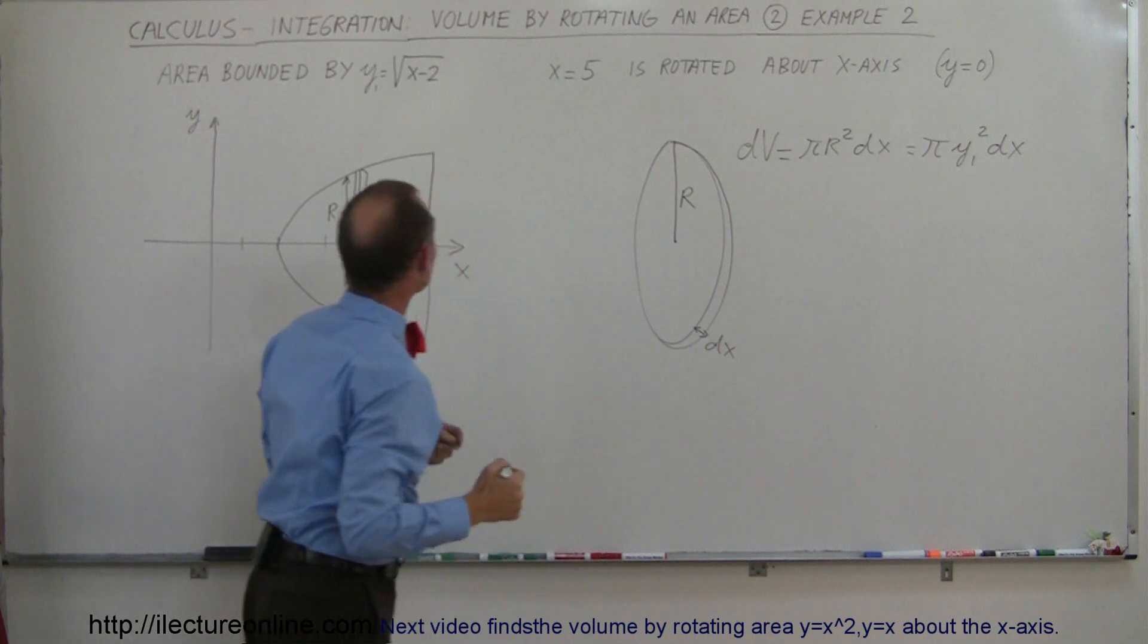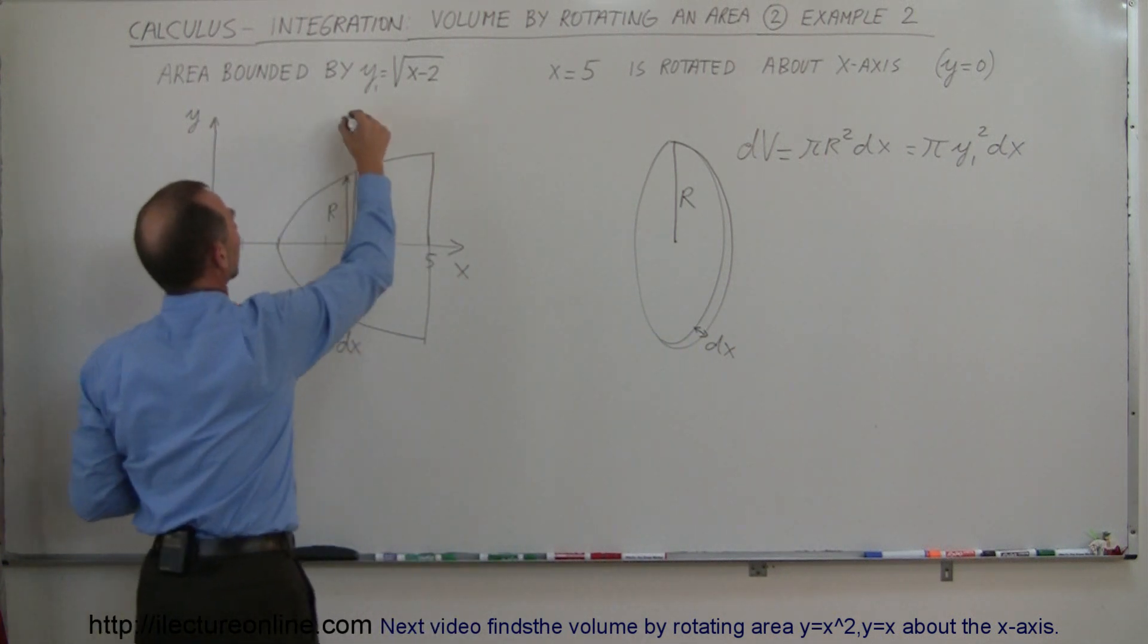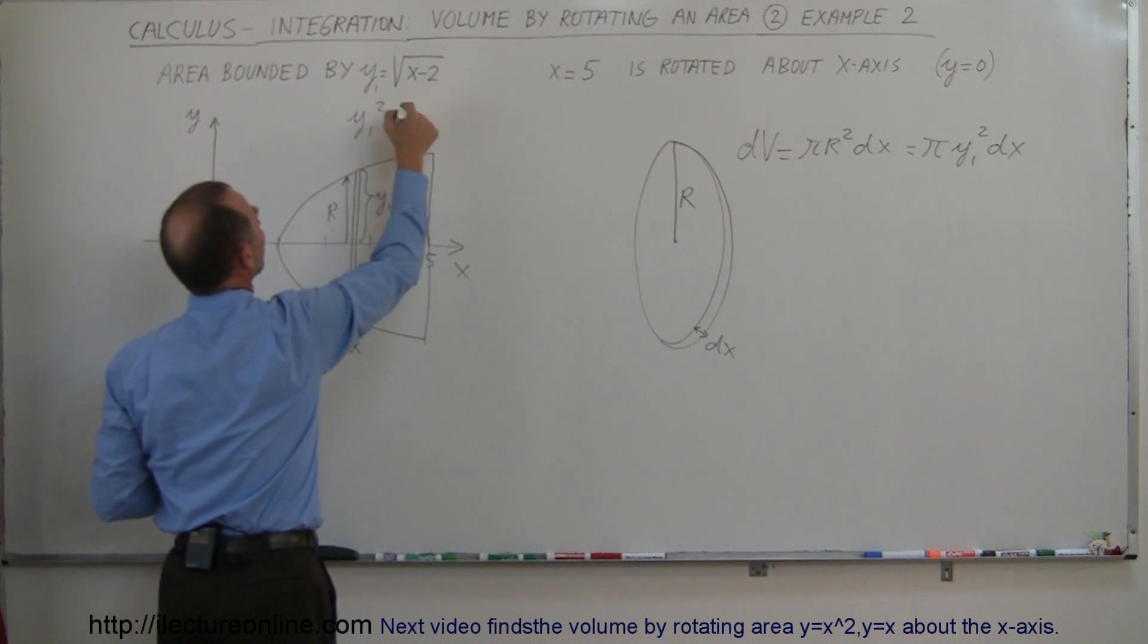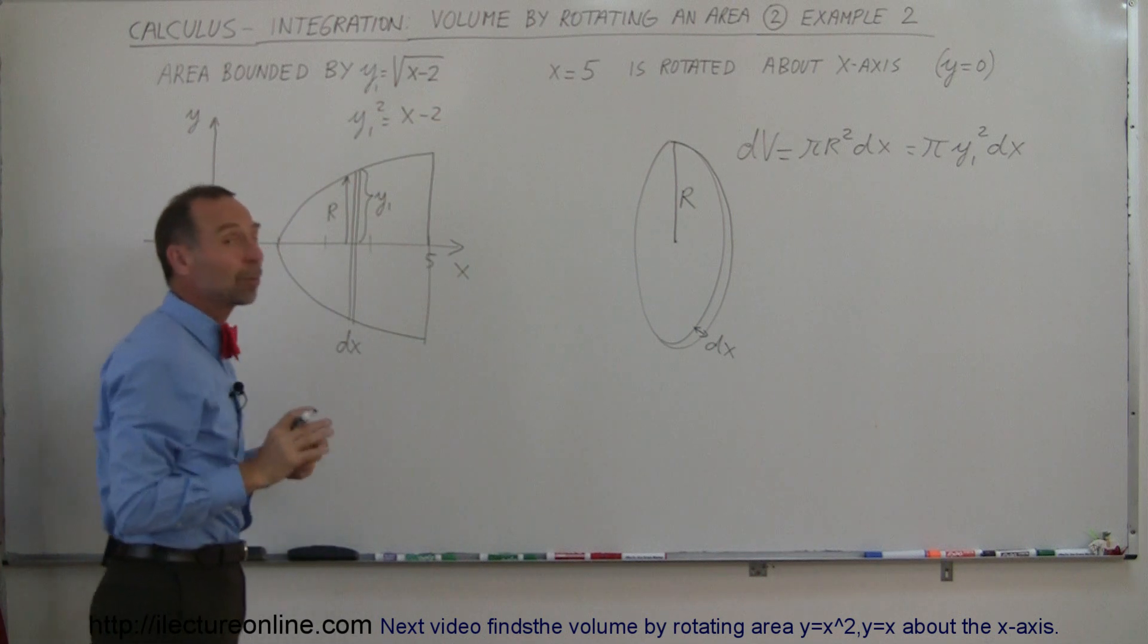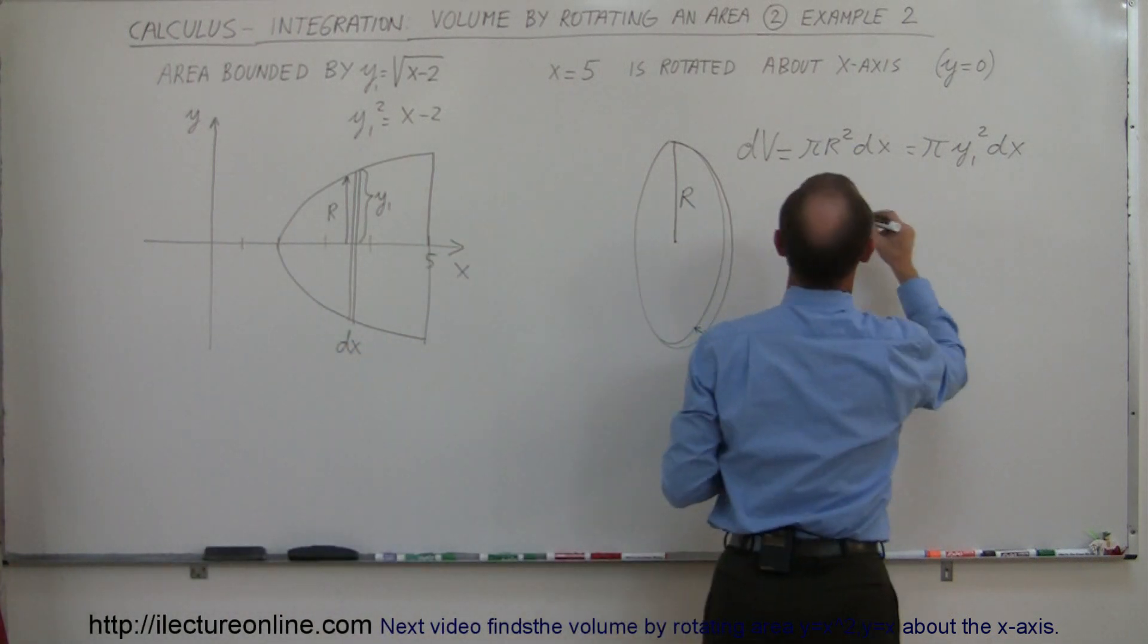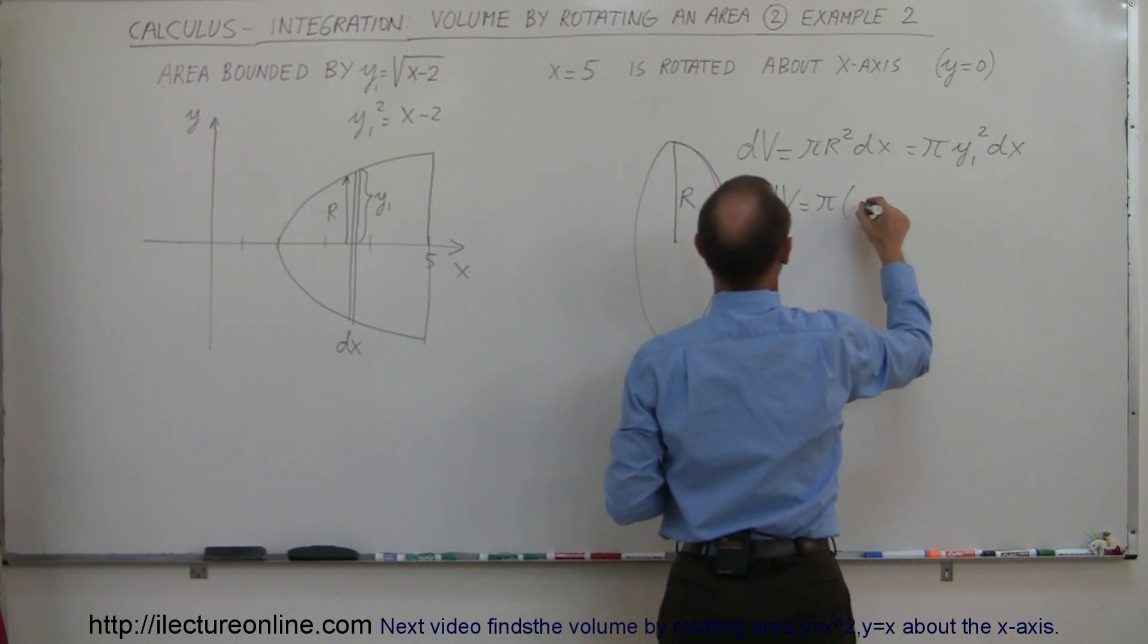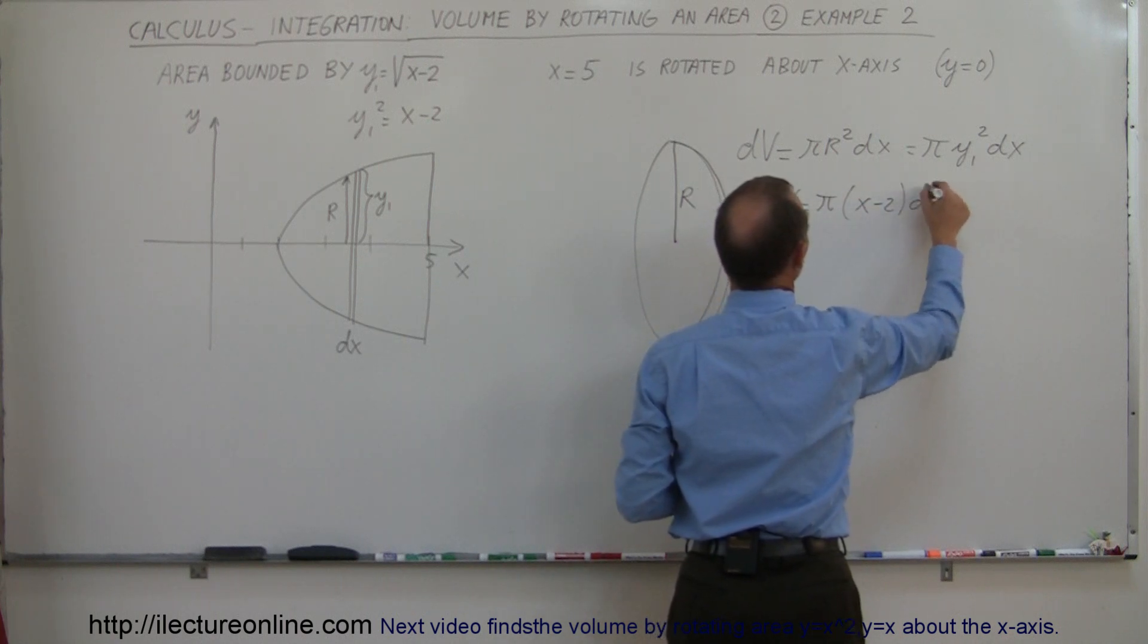Coming up here, if y1 is equal to this, then y1 squared would be equal to this squared, which would be x minus 2. In other words, I could replace y1 squared by x minus 2. And my small little volume element dv is equal to π times (x minus 2) times dx.